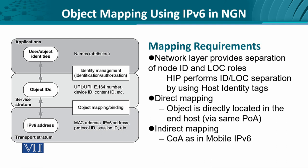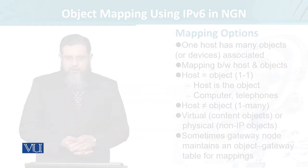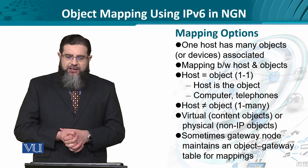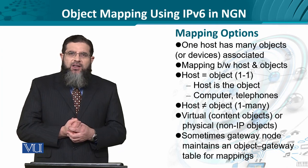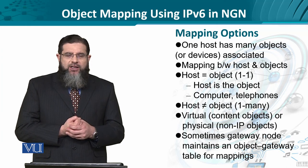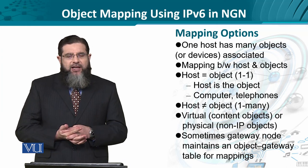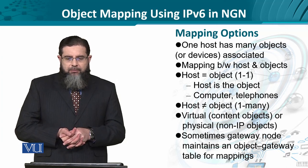It has its own implications — it makes things more complex. We have certain mapping options, like direct mapping or indirect mapping. Direct mapping is where the object is directly located in the end host via the same point of attachment. But in other cases, an object could only be accessible through a gateway or through a care-of address as in mobile IPv6. Mapping could be one-to-one when the host itself is the object — a computer or a telephone, for example.